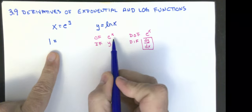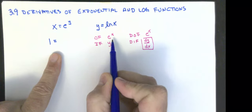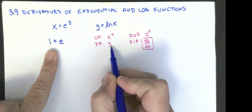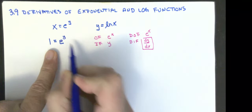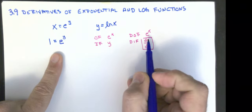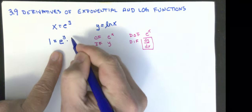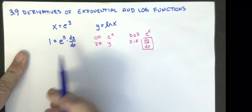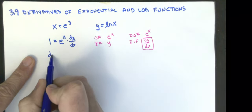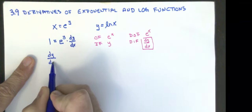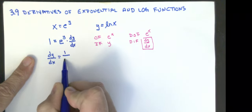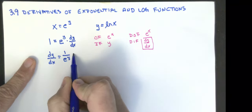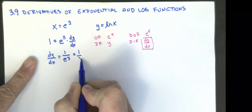I take the derivative of the outside function — except where there's an x, put parentheses — so I write e, put the y into the parentheses, multiplied by the derivative of the inside function, which is dy/dx. I'm now going to divide both sides by e to the y and flip both sides around, so I get dy/dx equals one over e to the y. But we know that e to the y is also equal to x, so that is equal to one over x.